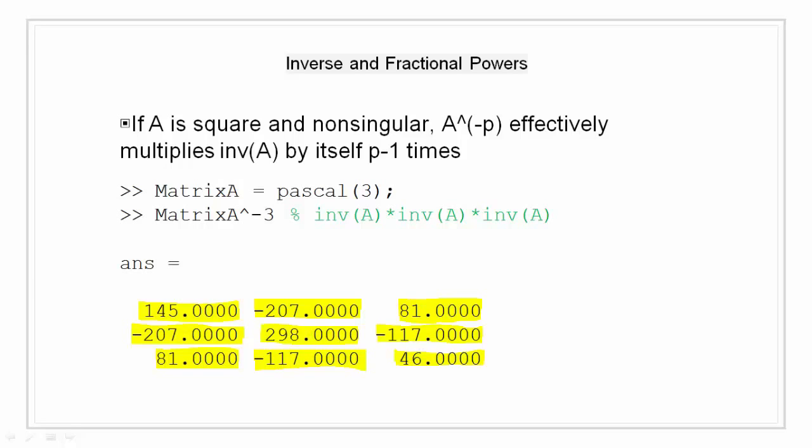Fractional powers like A to the power 2 by 3, A to the power 1 by 2, or A to the power 4 by 5 are also permitted. But the results depend upon the distribution of eigenvalues of the matrix.